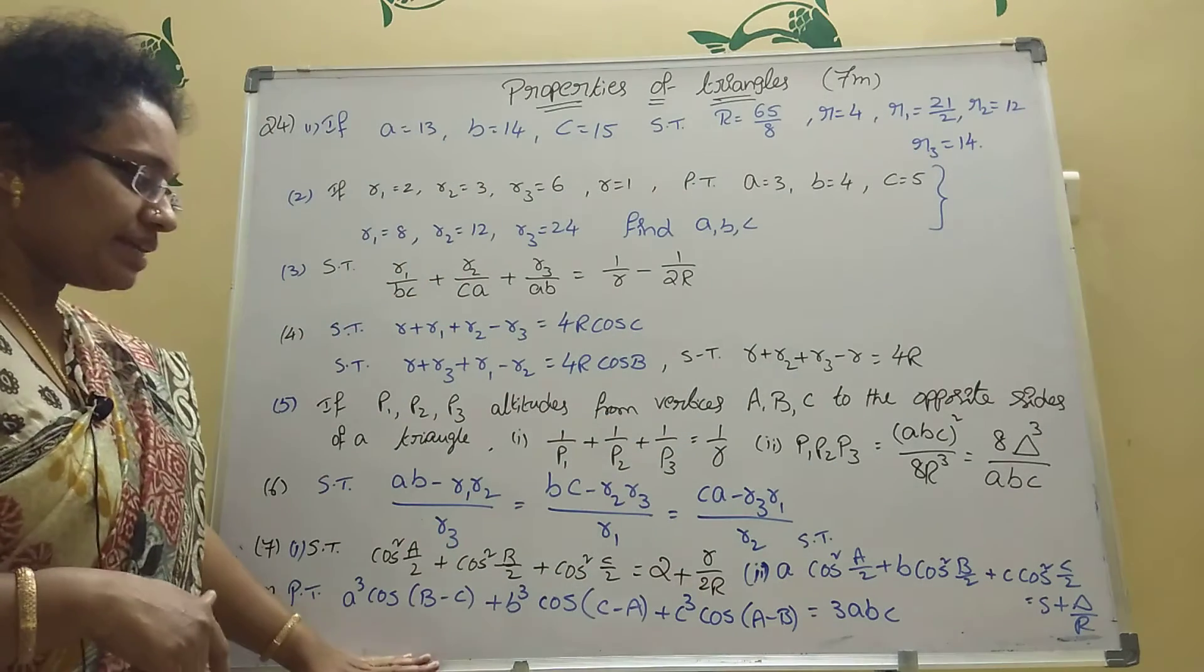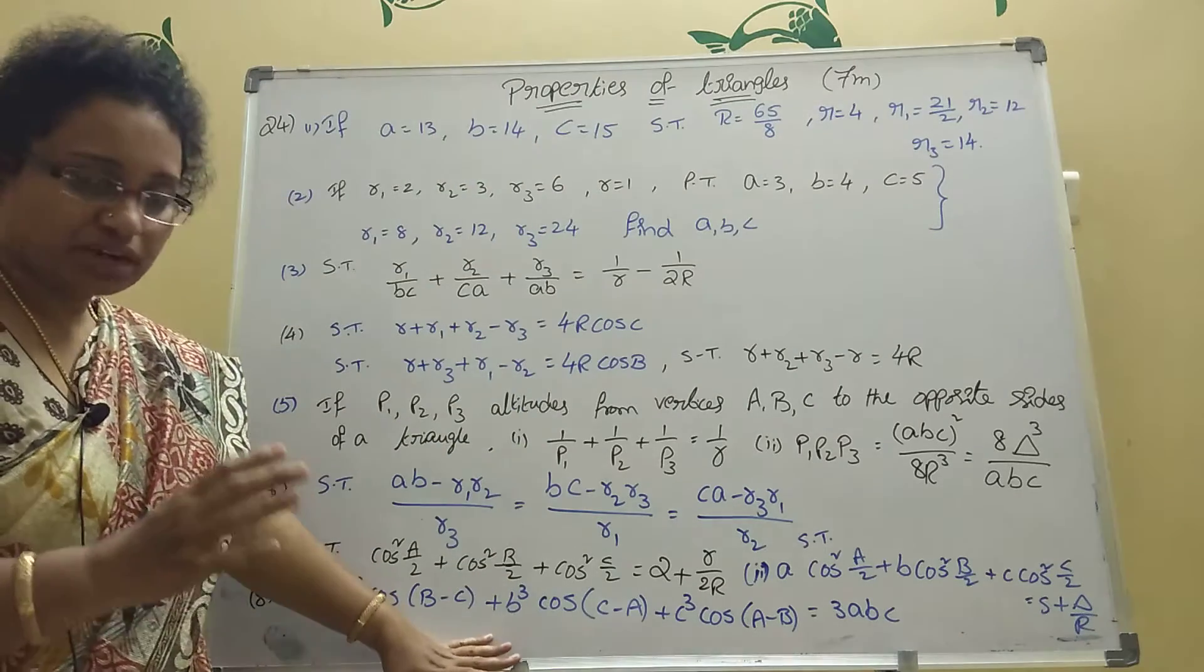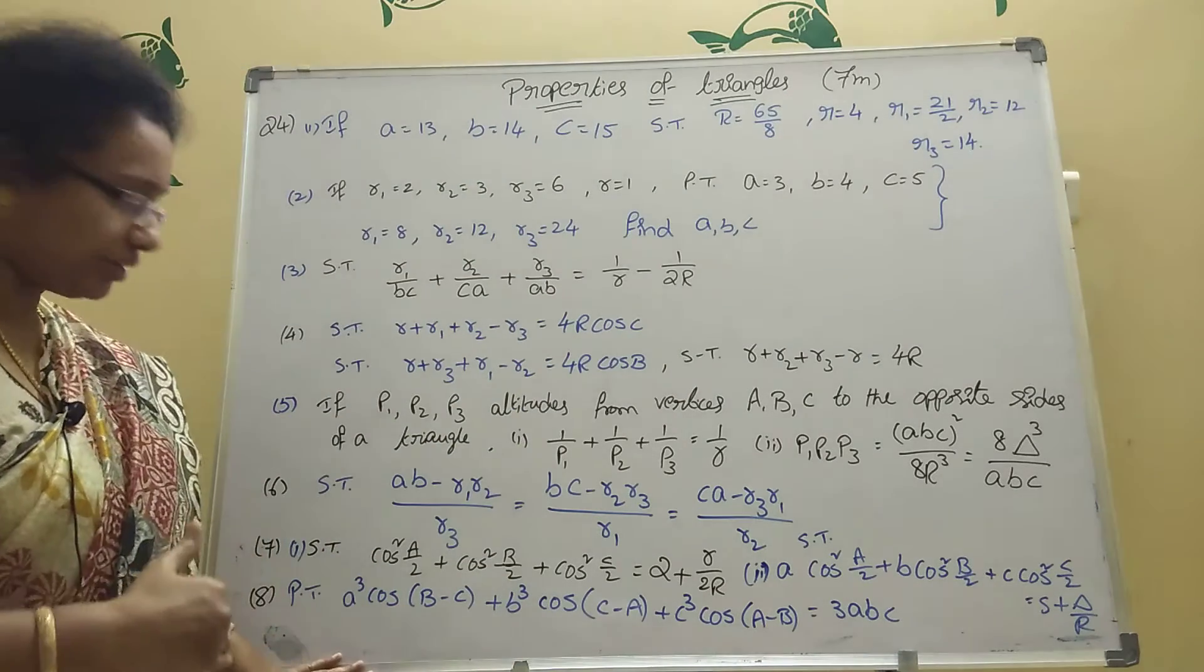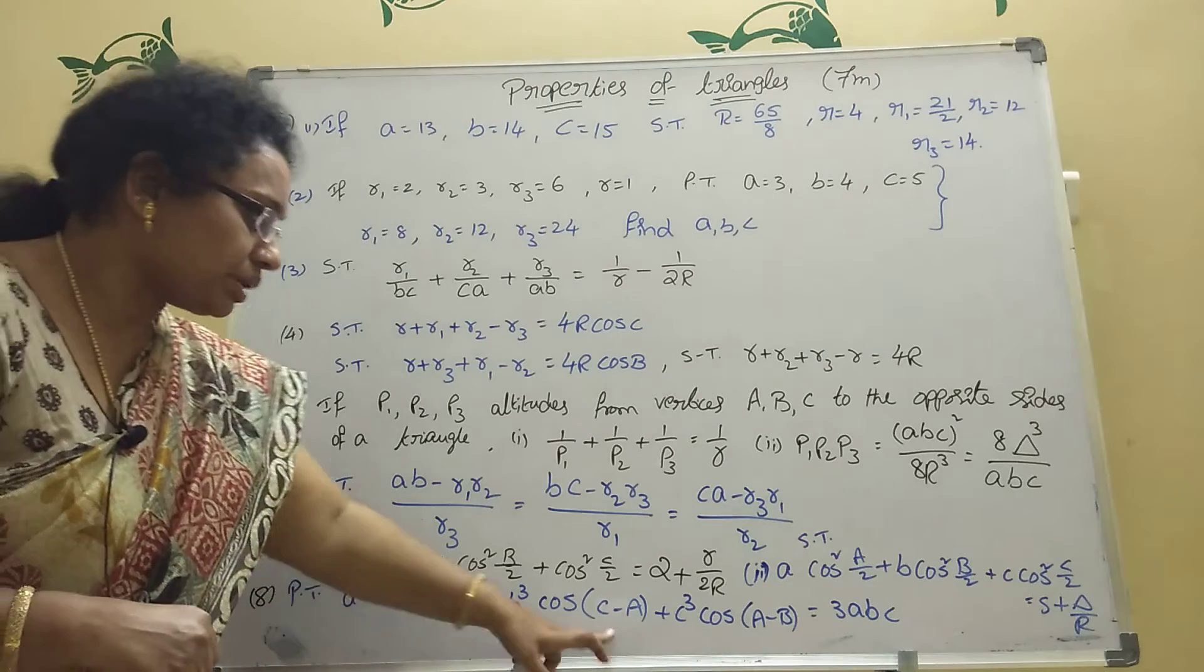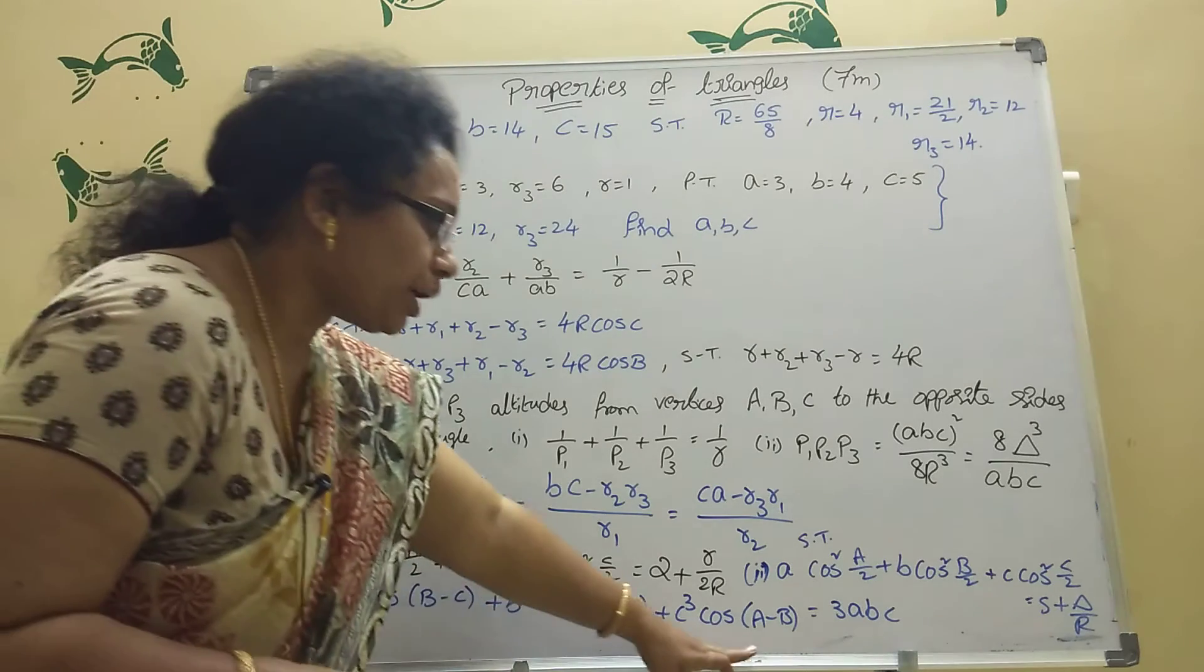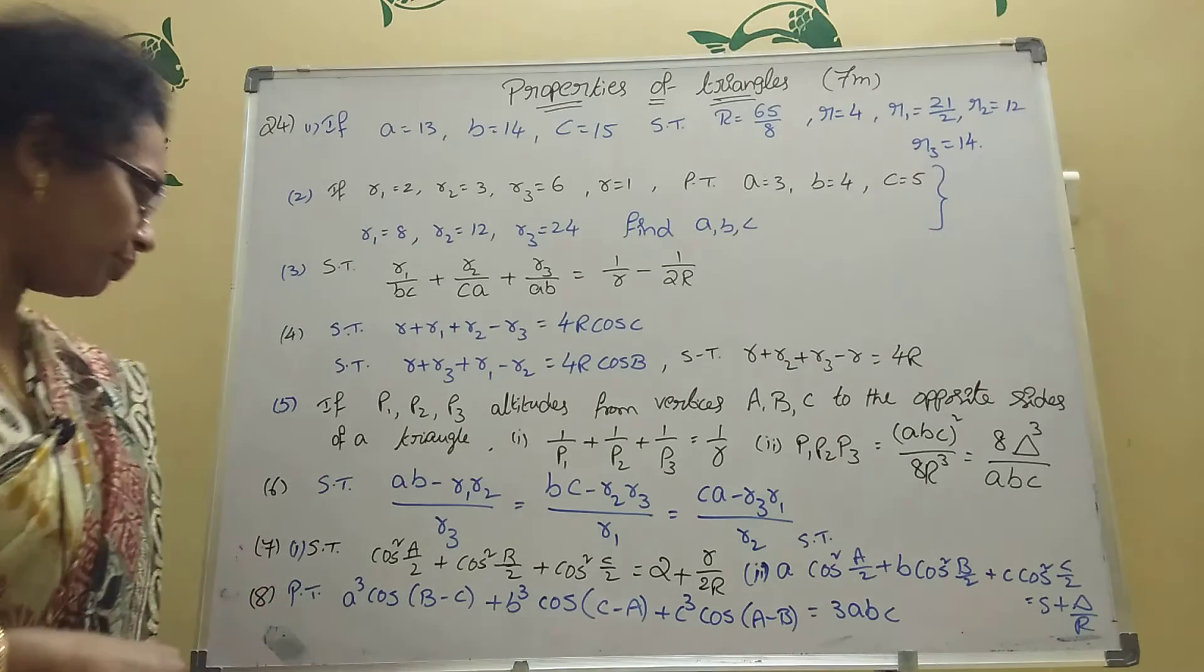Then eighth one is 90 percent here, just 10 percent only. You have chance here, the eighth one. I have to write up here. A cube cos of B minus C plus B cube cos of C minus A plus C cube cos of A minus B equal to 3ABC. This one also important.